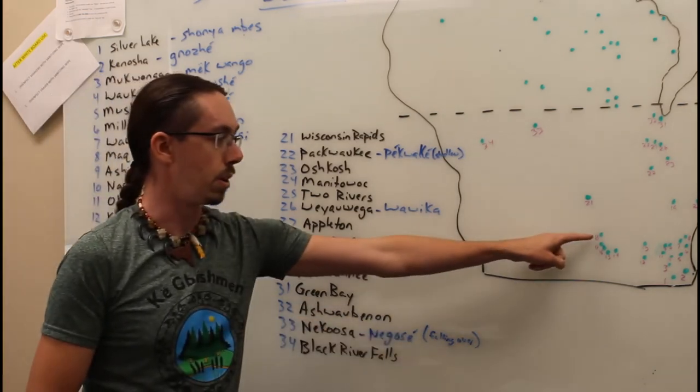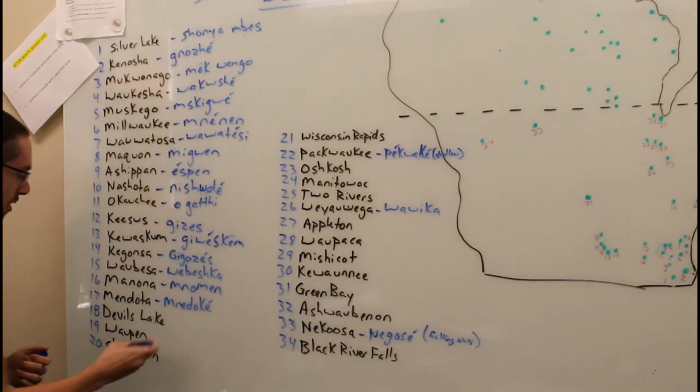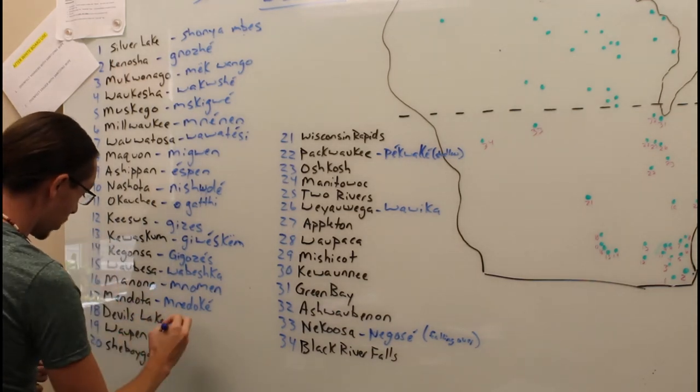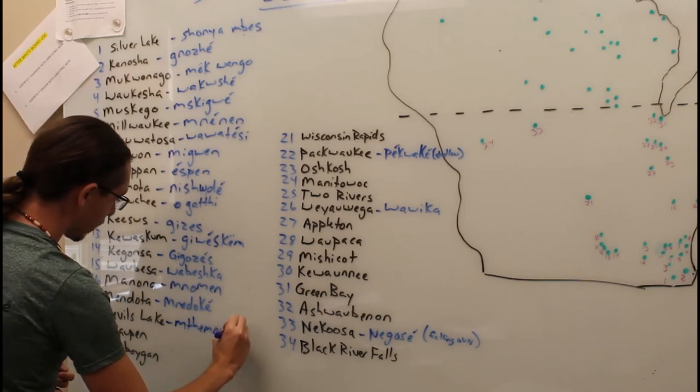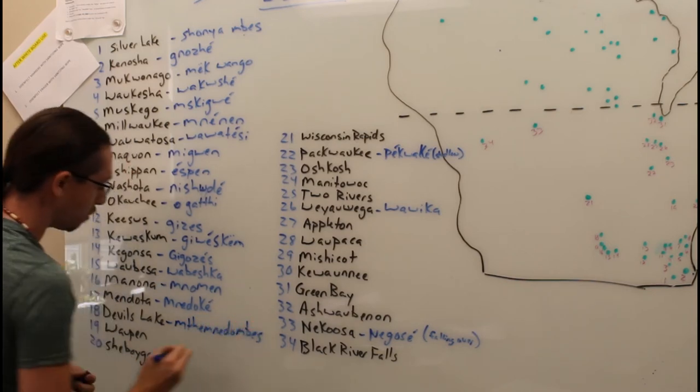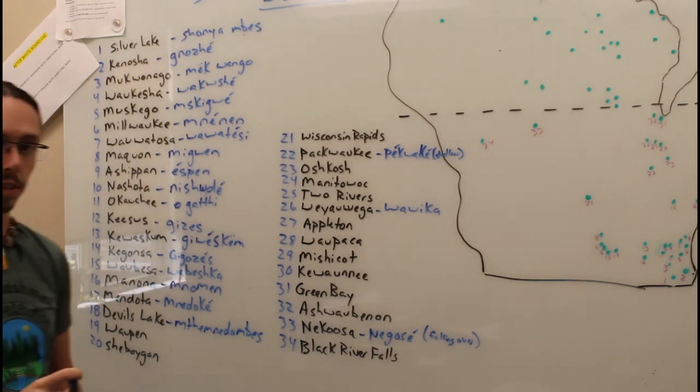Over on number 18, you have Devil's Lake, Wisconsin, and this is right off of the other translation, Jimna Dolpes. Devil's Lake.